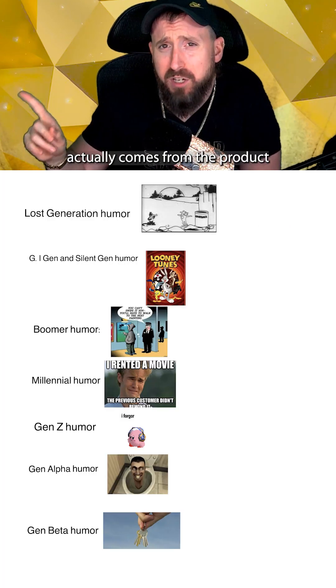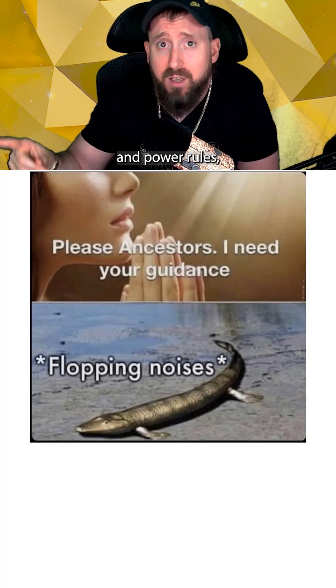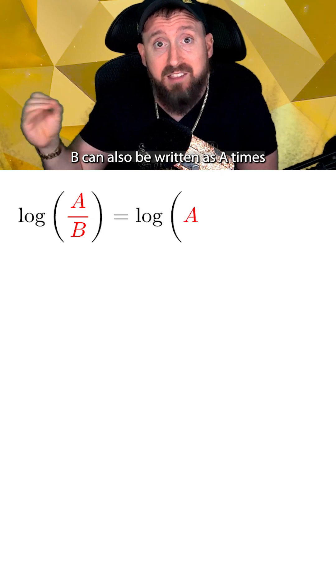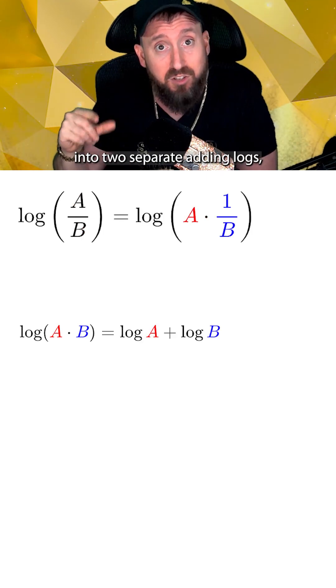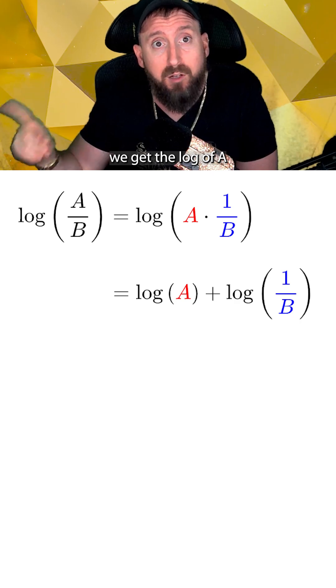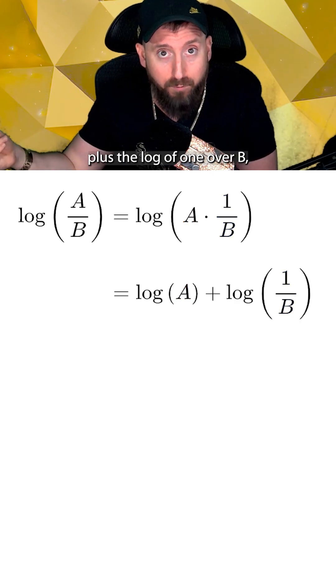The quotient rule actually comes from the product and power rules since a divided by b can also be written as a times one over b. Now if we use our product rule to split the multiplication into two separate adding logs, we get the log of a plus the log of one over b.